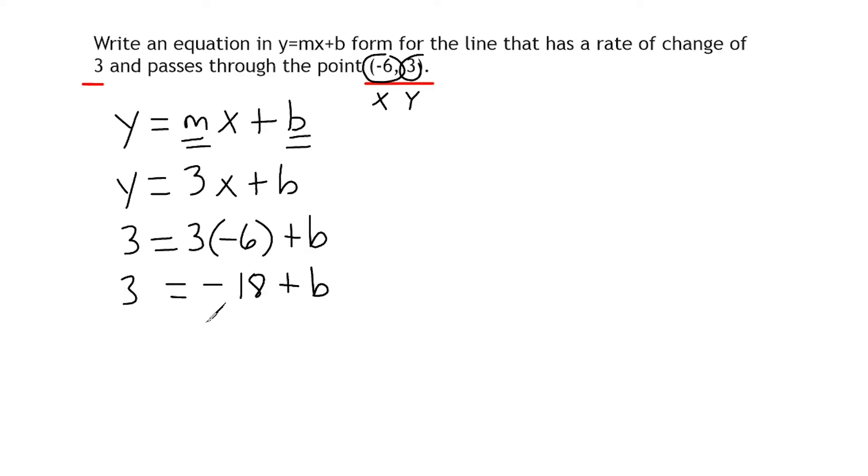And then we're going to take this term right here, negative 18, and move it on the other side of our equal sign by doing the inverse, which is positive 18. We have to do the same thing on this side. So on the left-hand side of our equal sign we have 21, and on the right-hand side we have b. So our line is going to intersect the y-axis precisely at positive 21. So what we're going to do now is we are going to write our equation as y equals 3x plus 21.